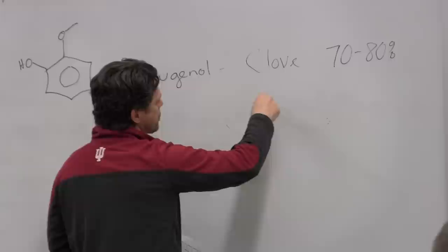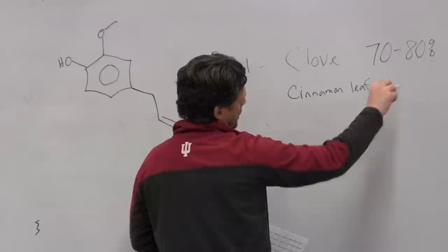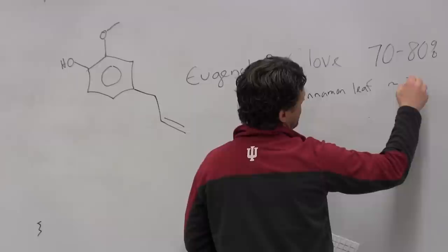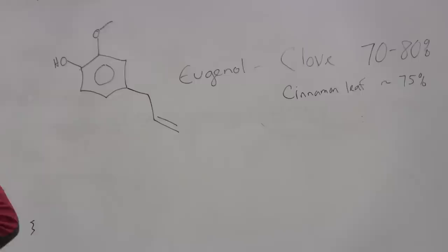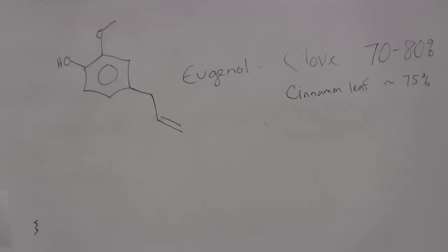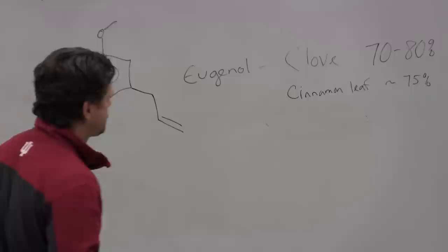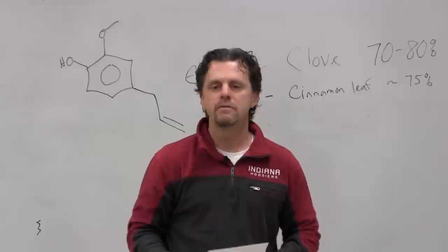It's also found in cinnamon leaf, again around 75 percent or so. Notice cinnamon leaf is 75 percent eugenol, whereas the bark is cinnamicaldehyde. So, same plant that it comes from, different part of the plant, big difference in the oil. And if you smelled cinnamon leaf and cinnamon bark, you'd see a huge difference.